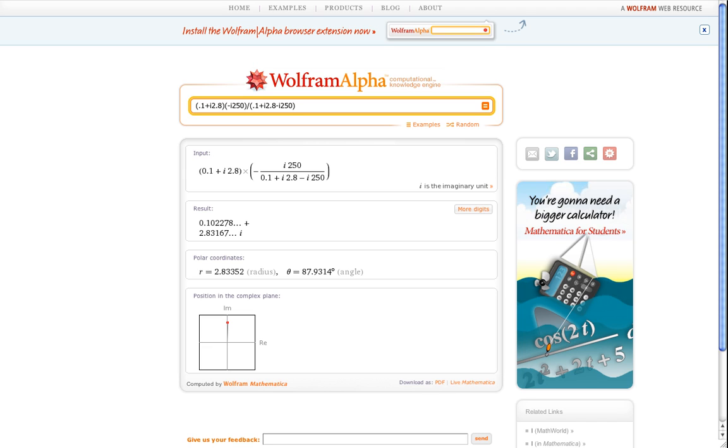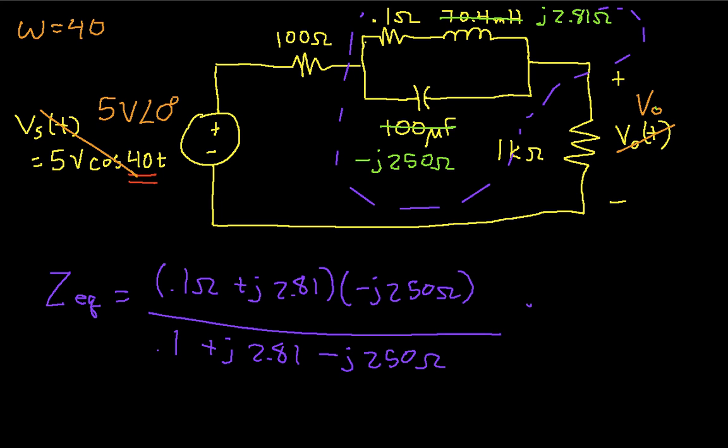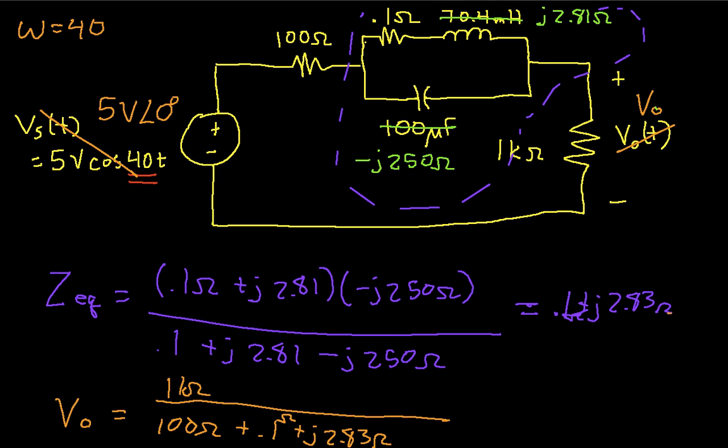Oops, Wolfram Alpha is not going to like the j. It's clearly made by mathematicians and not engineers. And when I solve this, I get that the equivalent impedance is 0.1 plus 2.83j. Okay, so now, this will be 0.1 plus j 2.83. These are all ohms here. Okay, so the last thing to do then is to find out what V0 is. Again, we'll use a voltage divider. We have V0 will be 1k ohm over 100 ohms plus 0.1 plus j 2.83 ohms plus 1k ohm times 5 at an angle of 0. And I work this out.